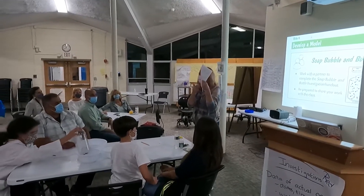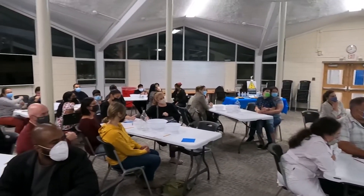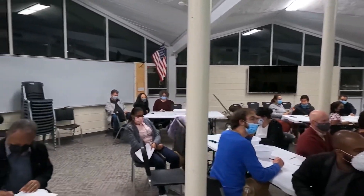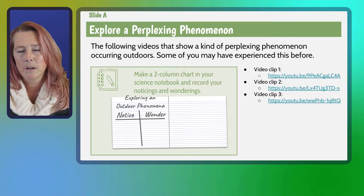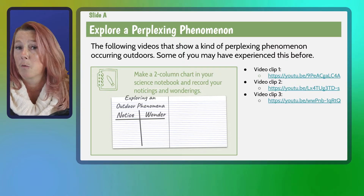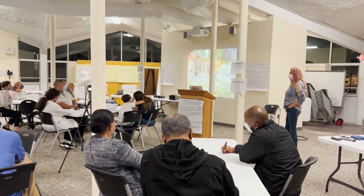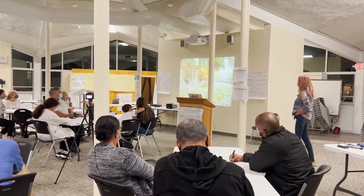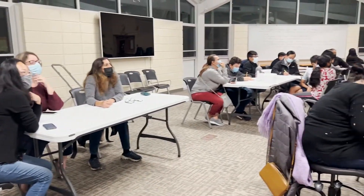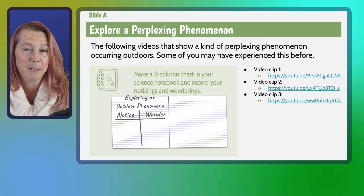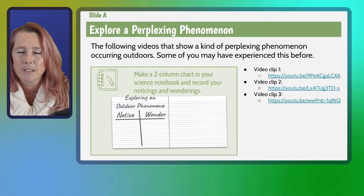For this activity with the PTO, I had them explore a phenomenon from the weather unit as an example. You can see there are video clips that the teacher shows and a notebook page that students fill out with notices and wonders. This would be the very first thing students do — they watch these videos and look for things they notice, which is an observation, and then they change those observations into questions, which is a wonder. I showed these videos about hailstorms, and parents got a little experience in noticing and wondering.